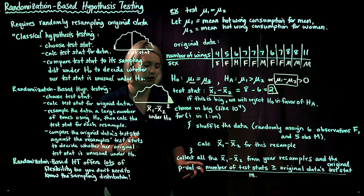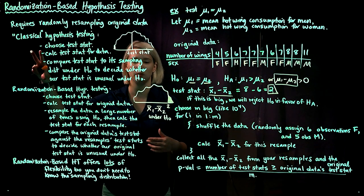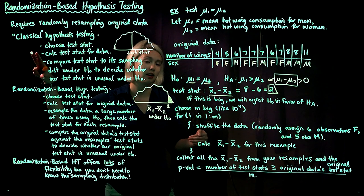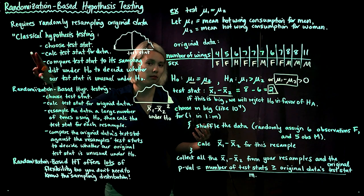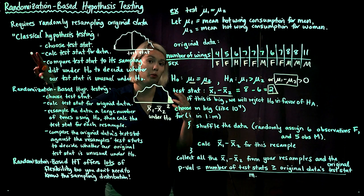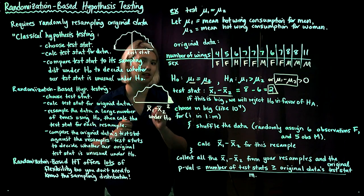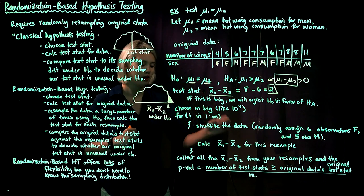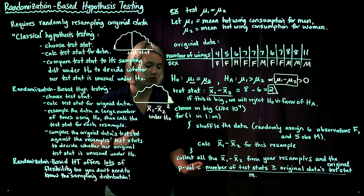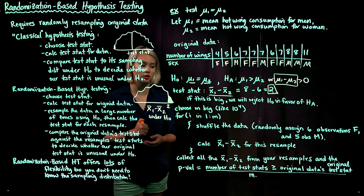This gives us our p-value. In the classical framework, the p-value is the probability of seeing a test statistic as extreme or more extreme than the one from our original data set, under the null hypothesis sampling distribution. Here, the only difference is we've approximated that sampling distribution using computing — so the p-value is an approximation: the proportion of resampled test statistics that are just as extreme or more extreme than our original data's test statistic, given the null hypothesis.